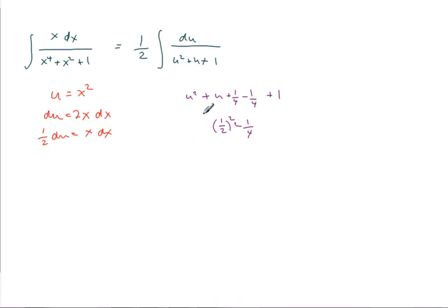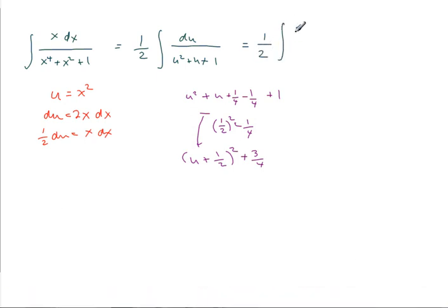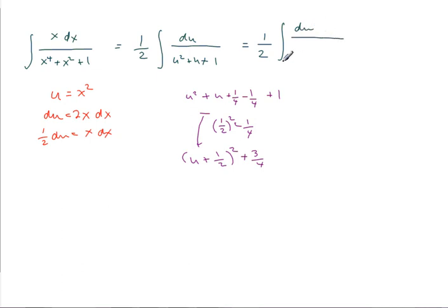And the idea, then, is that this is u plus 1 half the quantity squared. 1 minus 1 fourth is plus 3 fourths. So, I can rewrite this as 1 half integral du over u plus 1 half squared plus 3 fourths.